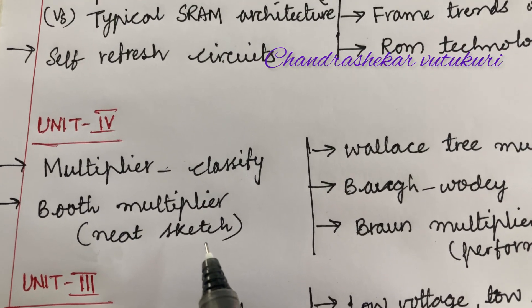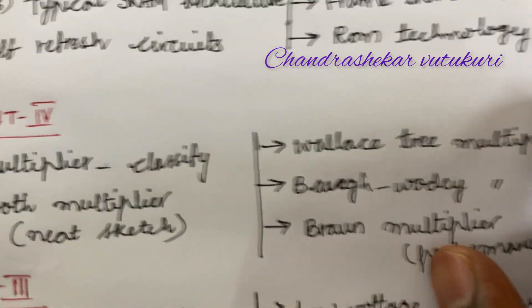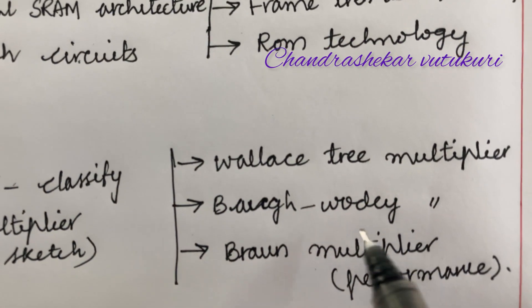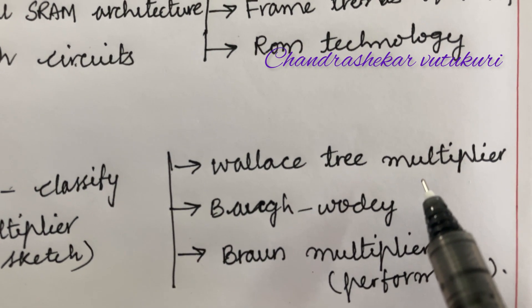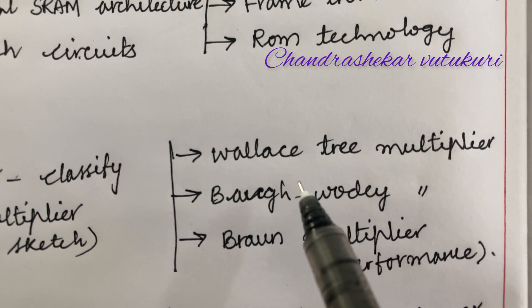Here it's all about the multiplier and wherever the problems are there, you are supposed to work out even the problems which I have not highlighted here based on the multipliers. There are different types you need to work out. Any of the multipliers may be asked in both the questions with the option, like Wallace tree multiplier along with neat sketch.